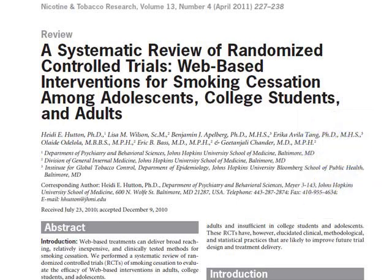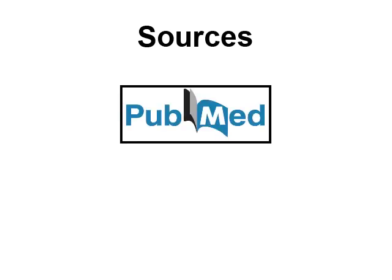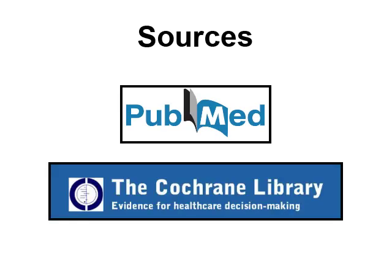However, not every topic has a systematic review. Systematic reviews are only written for mature, important research areas. To find clinical studies and systematic reviews, your best sources are the PubMed and Cochrane Library databases.